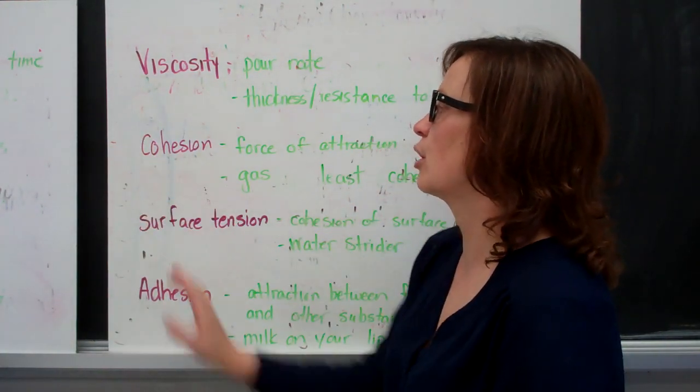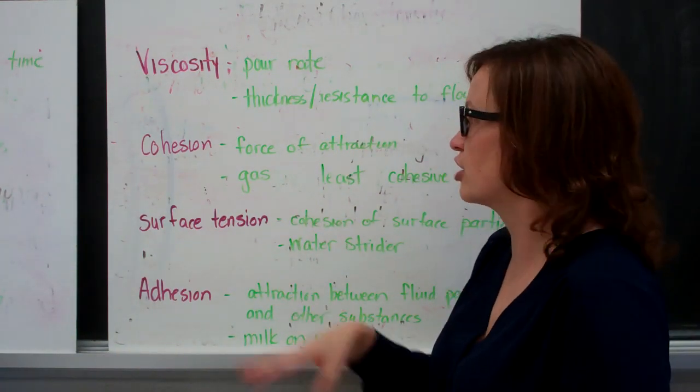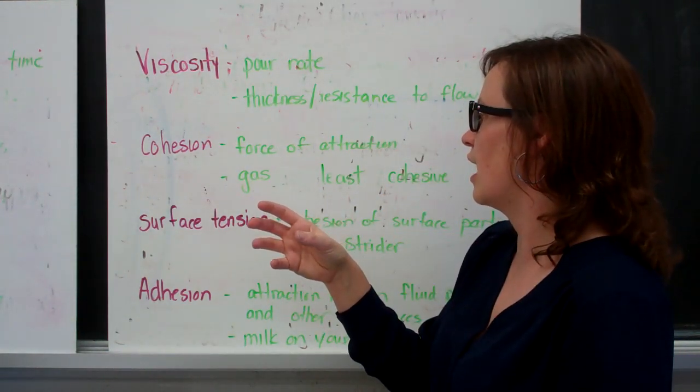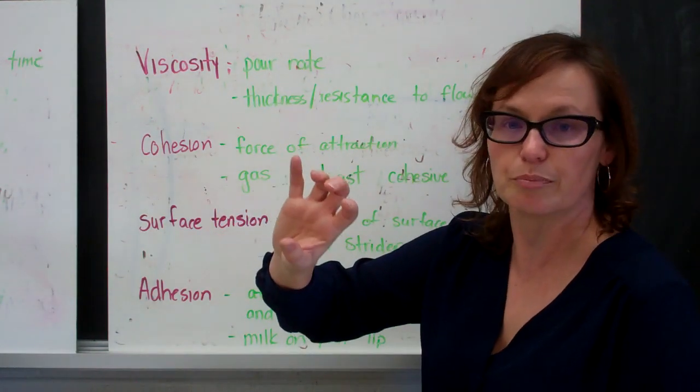And that has to do with the cohesion. So cohesion is the force of attraction between the particles, and the greater the rate of attraction, the less viscous it is, so that it has difficulty pouring.